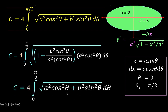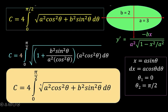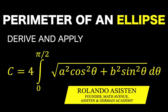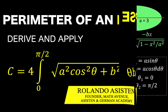This resulting equation is exactly the formula we set out to prove. So, ladies and gentlemen, we have proven that the formula for the circumference of an ellipse is C equals 4 times the definite integral from 0 to pi over 2 of the square root of a squared cosine squared theta plus b squared sine squared theta d theta, where a is one-half the length of the major axis and b is one-half the length of the minor axis. Thank you very much. This is Lando Assistant, and we'll see you again in our next video. Bye for now.